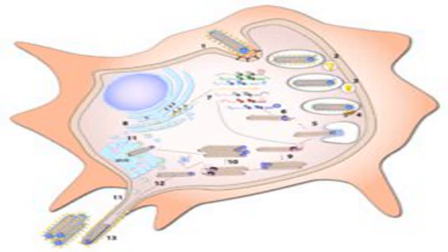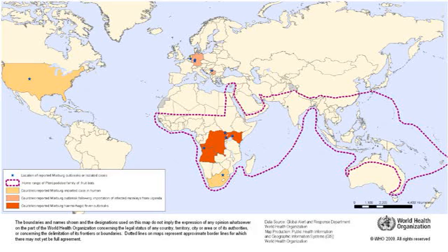Marburg Virus L binds to a single promoter located at the 3′ end of the genome. Transcription either terminates after a gene or continues to the next gene downstream, meaning genes close to the 3′ end are transcribed in the greatest abundance, whereas those toward the 5′ end are least likely to be transcribed. The gene order is therefore a simple but effective form of transcriptional regulation. The most abundant protein produced is the nucleoprotein, whose concentration in the cell determines when L switches from gene transcription to genome replication.